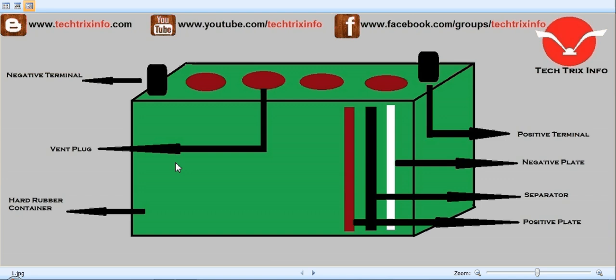The electrolyte of automobile batteries is made of dilute sulfuric acid with water. The important thing that should be noted is that acid should be poured into the water and not vice versa, as it will cause an explosion.